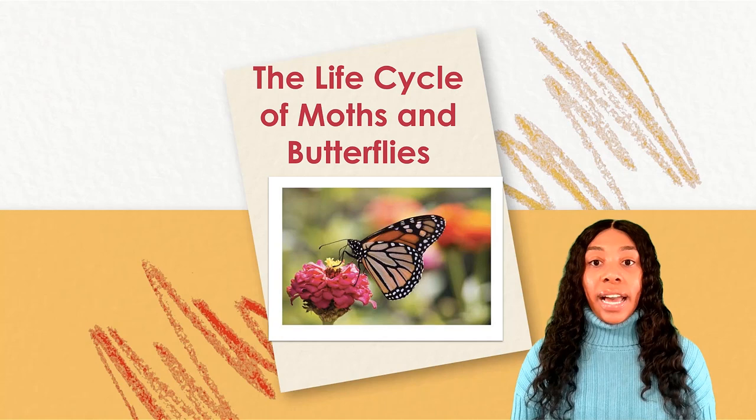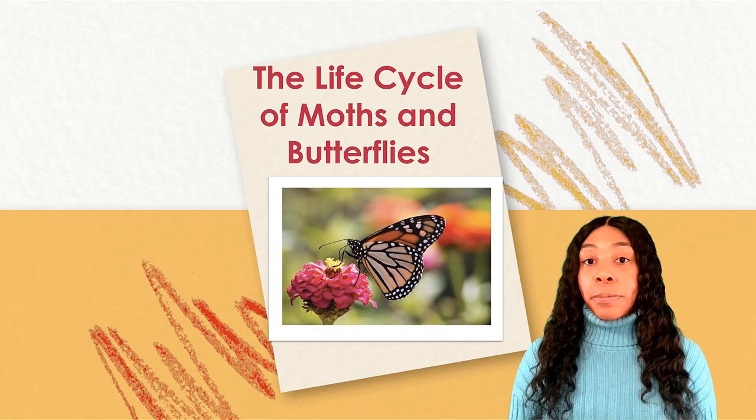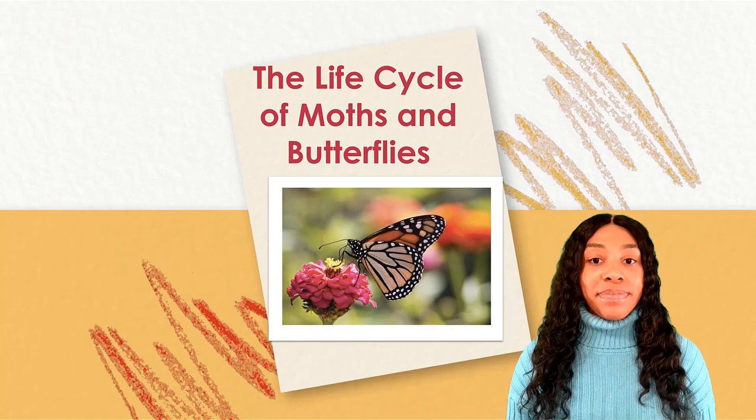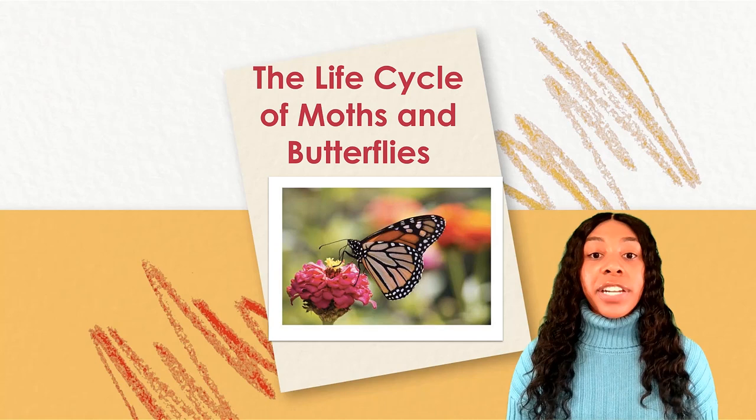Pupa: The chrysalis or pupa stage is when the real transformation begins. During this stage, the caterpillar rests and forms a brown or green covering over its body. The structure of the caterpillar breaks down and begins to take the form of an adult insect while it is inside the chrysalis.